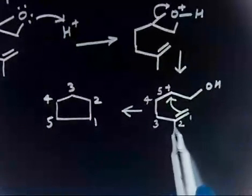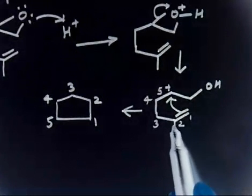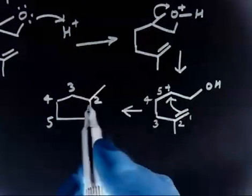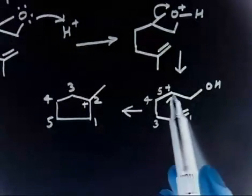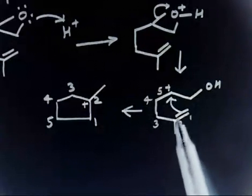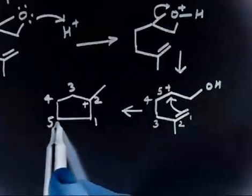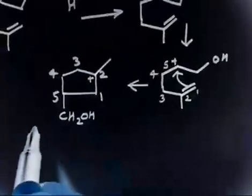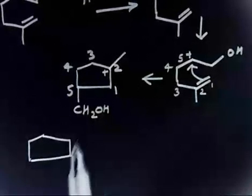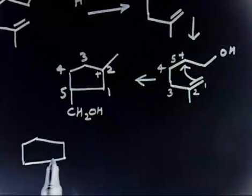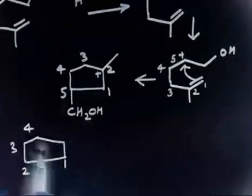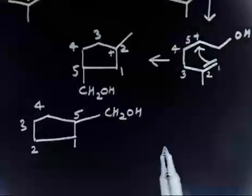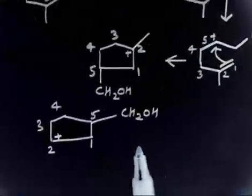Now, at position number 2 you have a CH₃ group. There will be a positive charge at position number 2 because the double bond attacked there. At position number 5 you will have the CH₂OH group attached. Let me write this molecule again with clearer numbering: positions 1, 2, 3, 4, 5 — at position 5 we have CH₂OH, and at position 2 we have the positive charge and the methyl group.